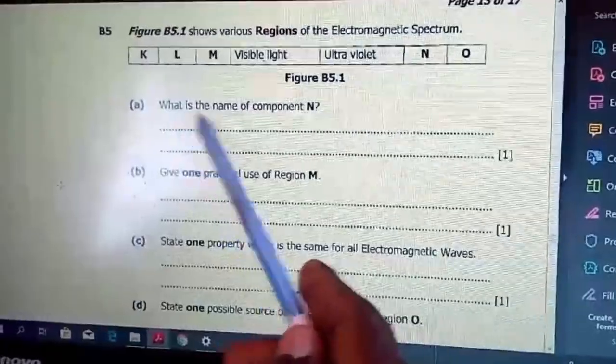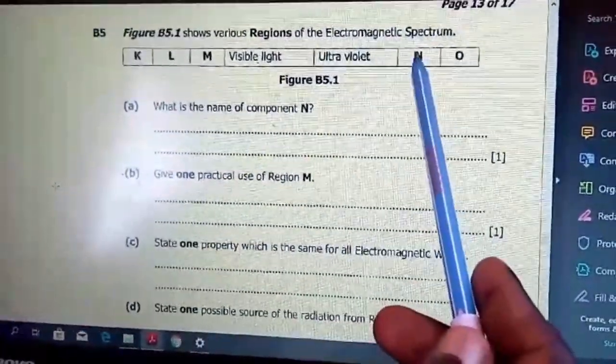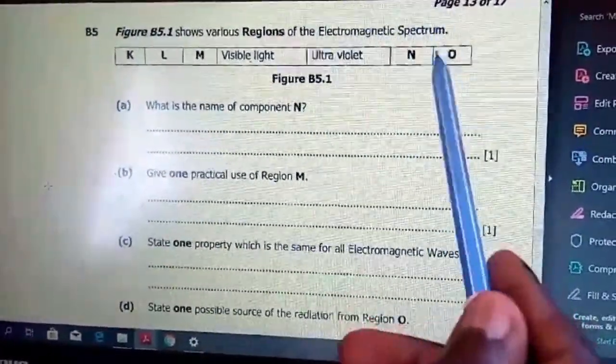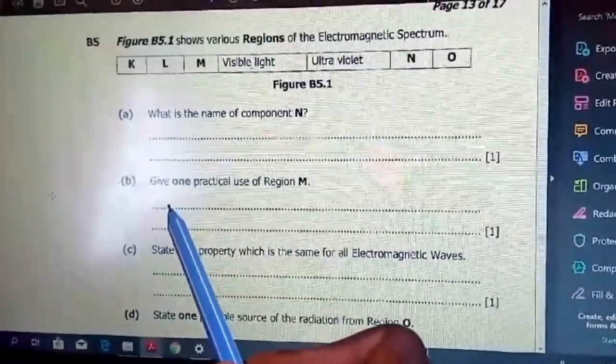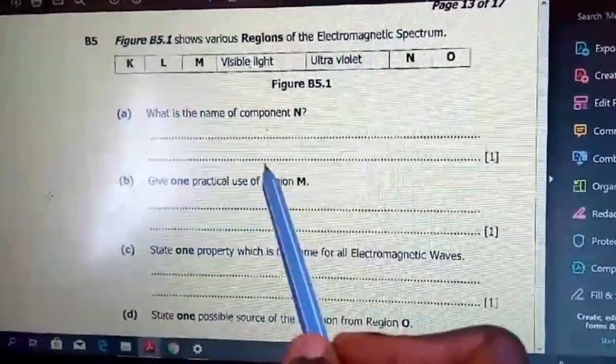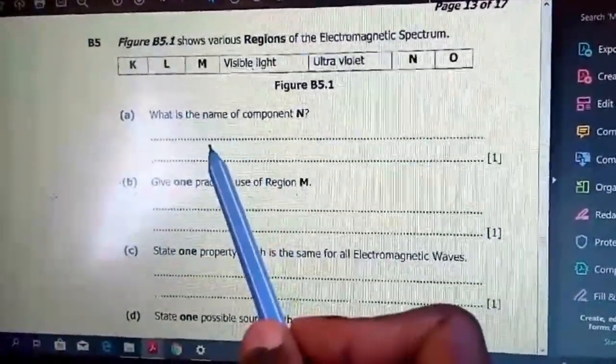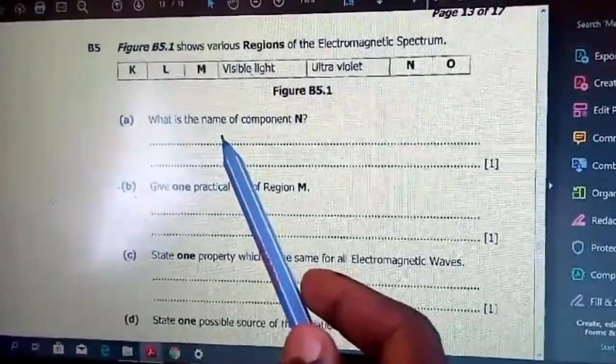What is the name of component N? Component N are x-rays. Then give one practical use of region M. Region M is what we just named as the infrared rays.